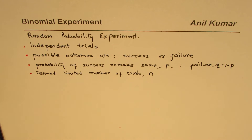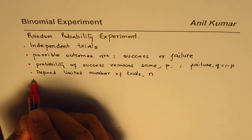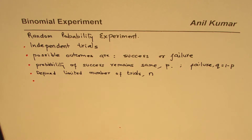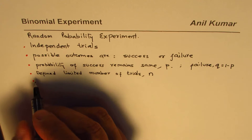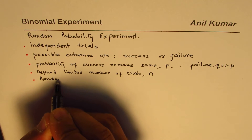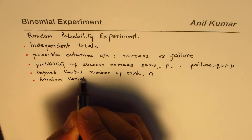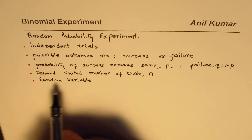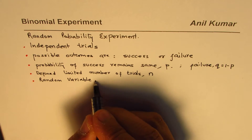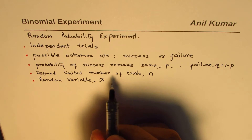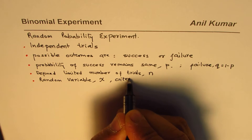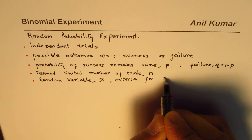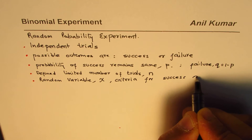So we have n number of trials, out of which the probability of success is P and probability of failure is 1 minus P, giving us only two options: success or failure. Now in any binomial experiment it is very important to define a random variable X, which gives you the criteria for success or failure.